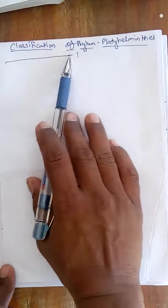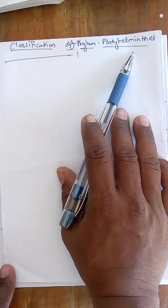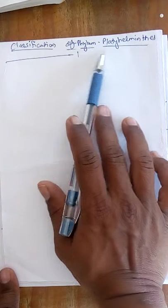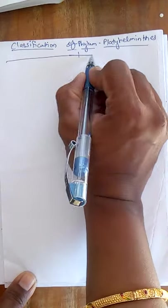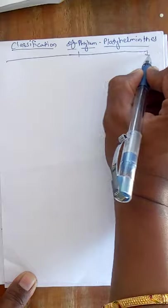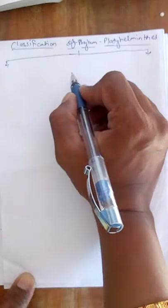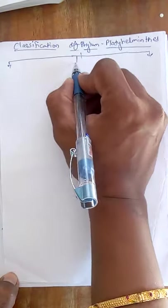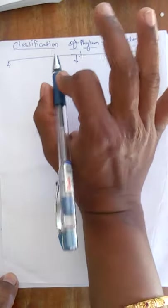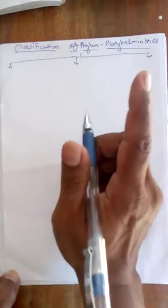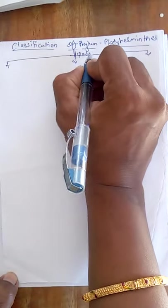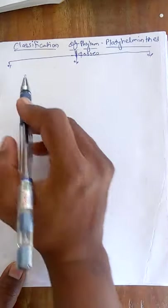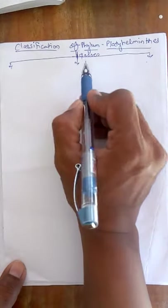Hello students. In this video we will study the classification of Phylum Platyhelminthes. In the last video we already studied the characters of Phylum Platyhelminthes, so here now we study its classification. Phylum Platyhelminthes is divided into three main classes.